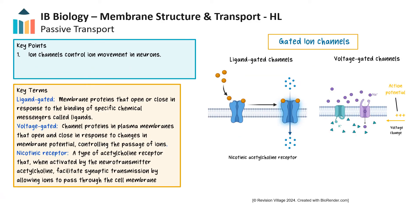Gated ion channels are specialized protein channels in the cell membrane that regulate the movement of ions, such as sodium and potassium, which are critical for neuron functioning. There are two primary types of gated ion channels: ligand-gated channels and voltage-gated channels. Ligand-gated ion channels open in response to a molecule acting as a chemical messenger, which binds to the target molecule to initiate a biological response. The ligand may be a small molecule or a larger molecule, such as a hormone or neurotransmitter.